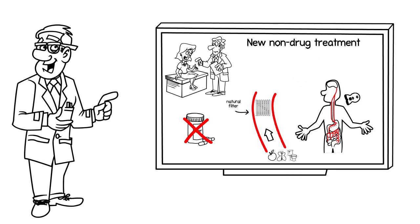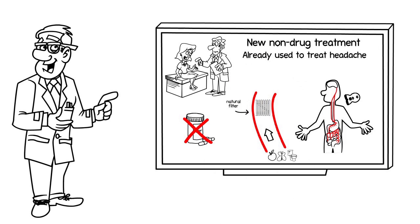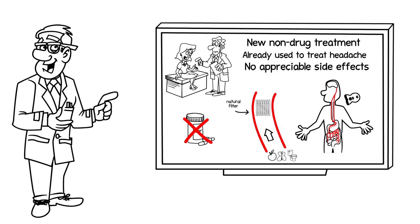So there you have it. This is a trial of an entirely new non-drug approach to treating both functional dyspepsia and irritable bowel syndrome. Vagal stimulation is already used to treat headache that is unresponsive to drug treatment, so we know it is safe. And unlike many drug treatments, there are no appreciable side effects.